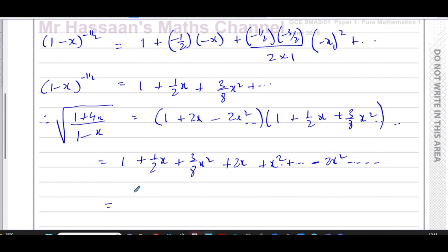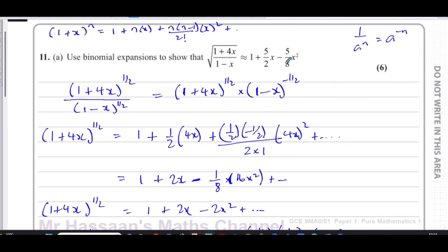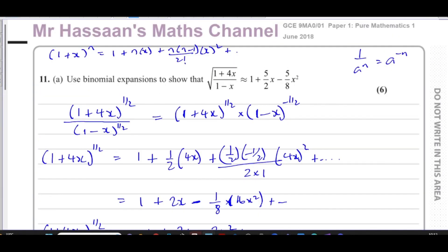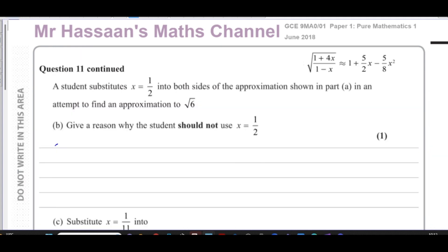Collecting terms: the constant is 1; the x terms are (1/2)x + 2x = (1/2 + 4/2)x = (5/2)x; the x² terms are (3/8)x² + x² − 2x² = (3/8 − 1)x² = −(5/8)x². So we get 1 + (5/2)x − (5/8)x², which is exactly what we needed to show.